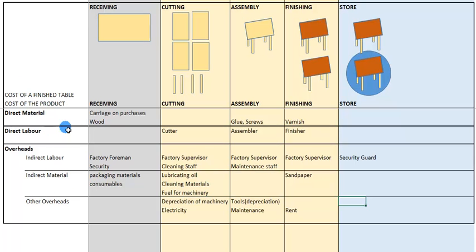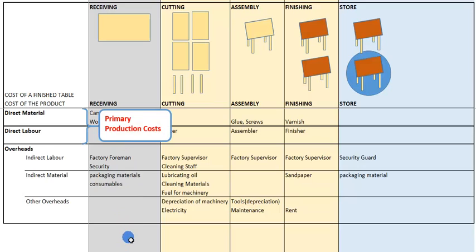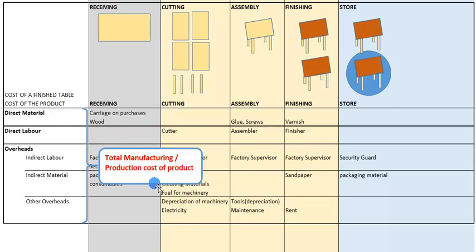To summarize the three product costs: direct material and direct labor together are known as primary production costs or primary manufacturing costs — the costs directly related to making the finished product. Factory overheads are the secondary costs, all the extra costs necessary to make the table. Together these three make up the total manufacturing or production cost of the finished product. For interest, direct labor and overheads combined are also called conversion costs, because they convert the raw material into a finished product.